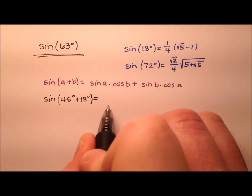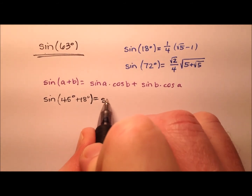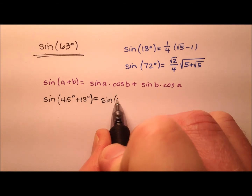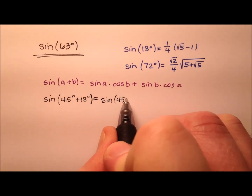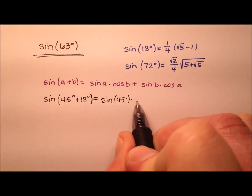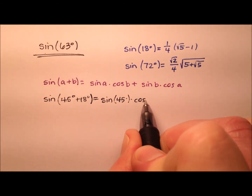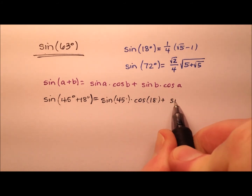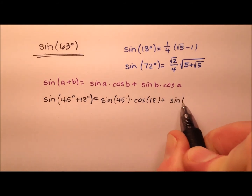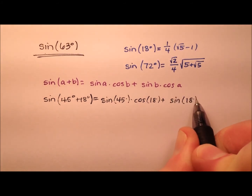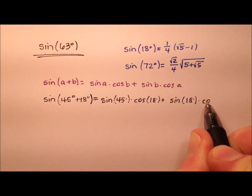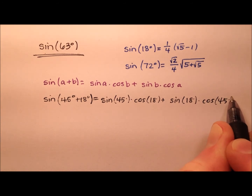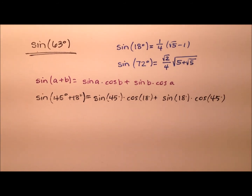Our expansion says that this will be equivalent to the sine of 45 degrees times the cosine of 18 degrees, plus the sine of 18 degrees times the cosine of 45 degrees.